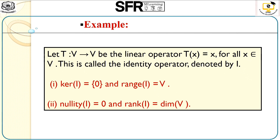The dimension is the number of elements in the basis of this kernel I. Here there is no basis element, that is why nullity of I is 0. For the range set, we consider the image set. All elements are mapped to the same elements, so the image set, the range of I, is nothing but the whole set V. That is why its dimension, rank of I, is nothing but dimension of V. If the dimension of V is N, then rank equals N and nullity is 0.